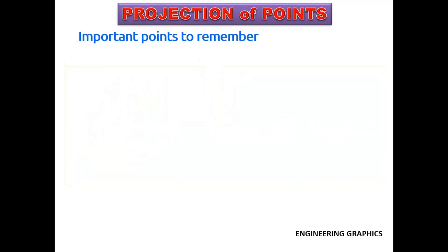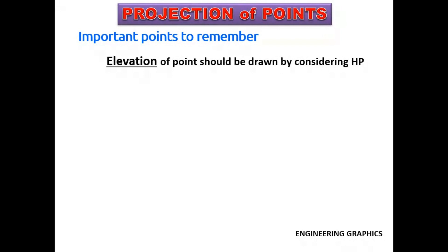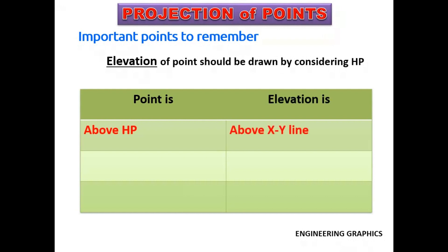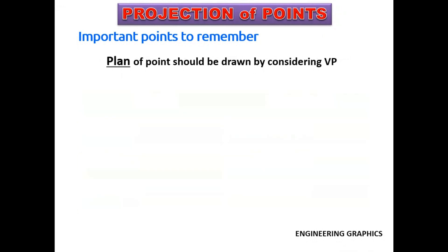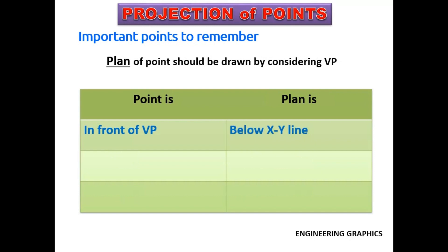Here are some important points to remember while drawing projections of a point. Elevation of a point can be drawn by considering the HP: if the point is above HP, its elevation should be drawn above the XY line; if the point is below HP, its elevation should be below the XY line. Plan of a point can be drawn by considering the VP: if the point is behind VP, its plan will be above the XY line; if the point is in front of VP, its plan should be drawn below the XY line.